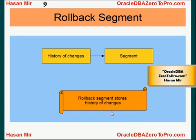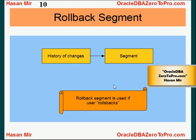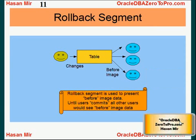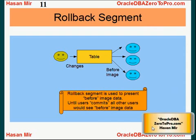Rollback segments store the history of changes. As we just saw, the rollback segment is used if the user rolls back the work. Another important concept is that the rollback segment is also used to present a before image. What does that mean?